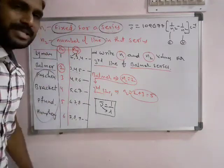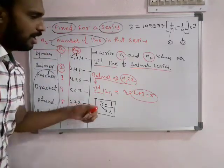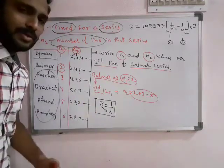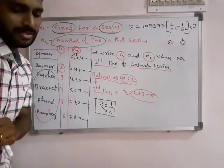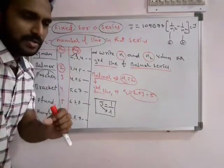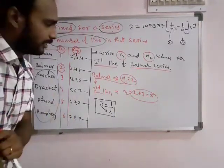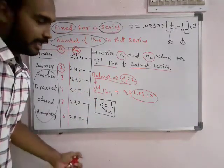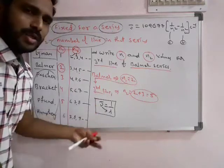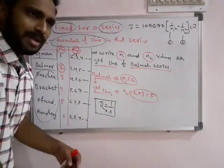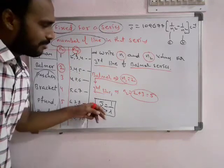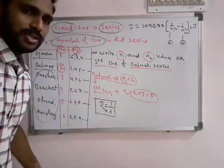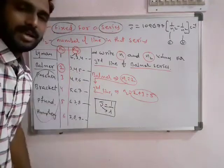The hydrogen spectrum is treated as the simplest spectrum among all elements because hydrogen contains only one electron in its atom. As the atomic number increases, the number of electrons increases, and it becomes very difficult to explain all spectral lines present in those elements.